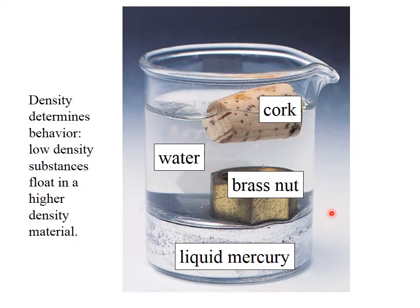The first thing to know about density is it tells you the behavior of the substance in other substances. The number value of the density, if the units are the same, tells you which one will float or sink in another. So if I look at the mercury down here, its density is around 13 grams per milliliter. That's much greater than that of water, which is one gram per milliliter.